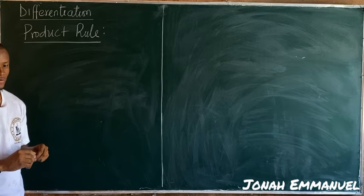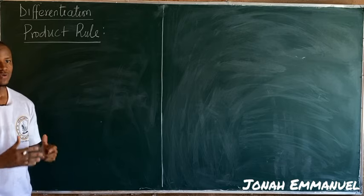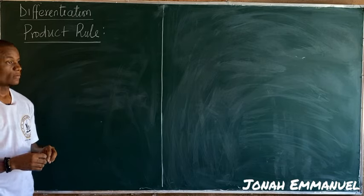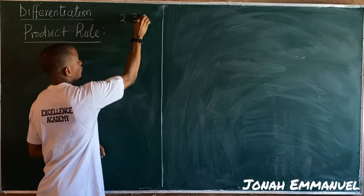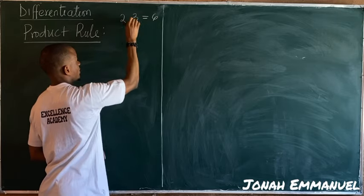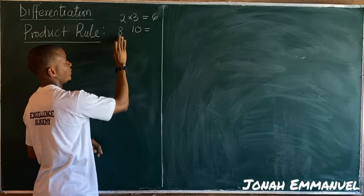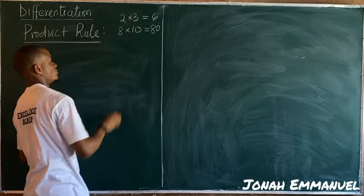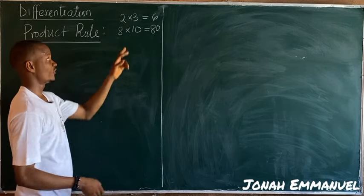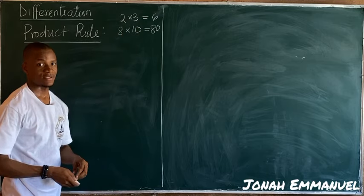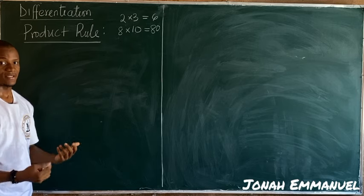By definition, a product is the result of multiplication. So product rule is used when two terms are multiplying. For example, the product of two and three is six, and the product of eight and ten is eighty. So a product is simply the result of multiplying two terms.